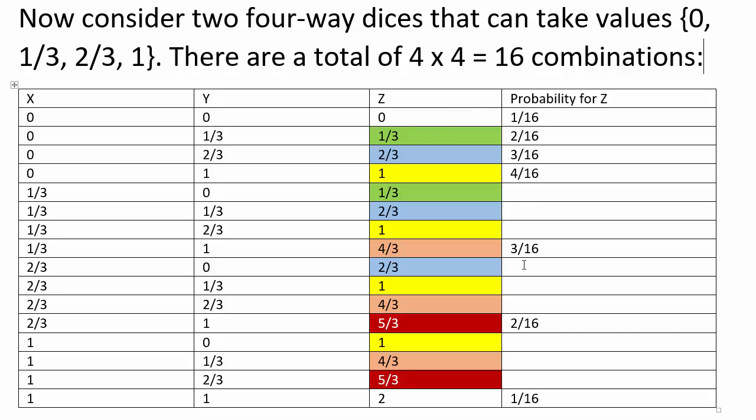And as you can see, the extreme sums appear only once, while the mid sum, that is one, appears four times, and the other sums appear three times or two times. So the closer to the extreme you are, the less chances of occurrence, and the closer to the middle you are, the greater the chances of occurrence.